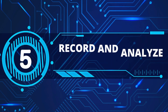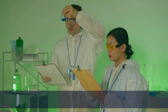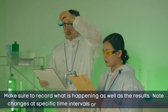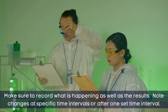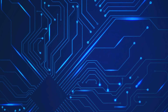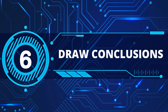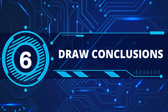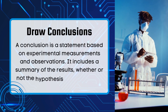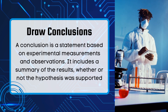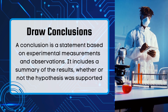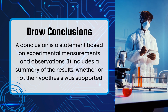Fifth, analyze your data. Once your experiment is complete, collect your measurements and analyze them to see if they support your hypothesis or not. Sixth, draw a conclusion. A conclusion is a statement based on experimental measurements and observations. It includes a summary of the results and whether or not the hypothesis was supported.